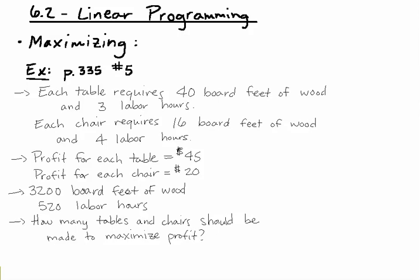I'm taking a look at an example out of the textbook. It's on page 335, number 5. Reading it, we have a division of the Winston Furniture Company manufactures dining tables and chairs. Each table requires 40 board feet of wood and 3 labor hours. Each chair requires 16 board feet of wood and 4 labor hours.